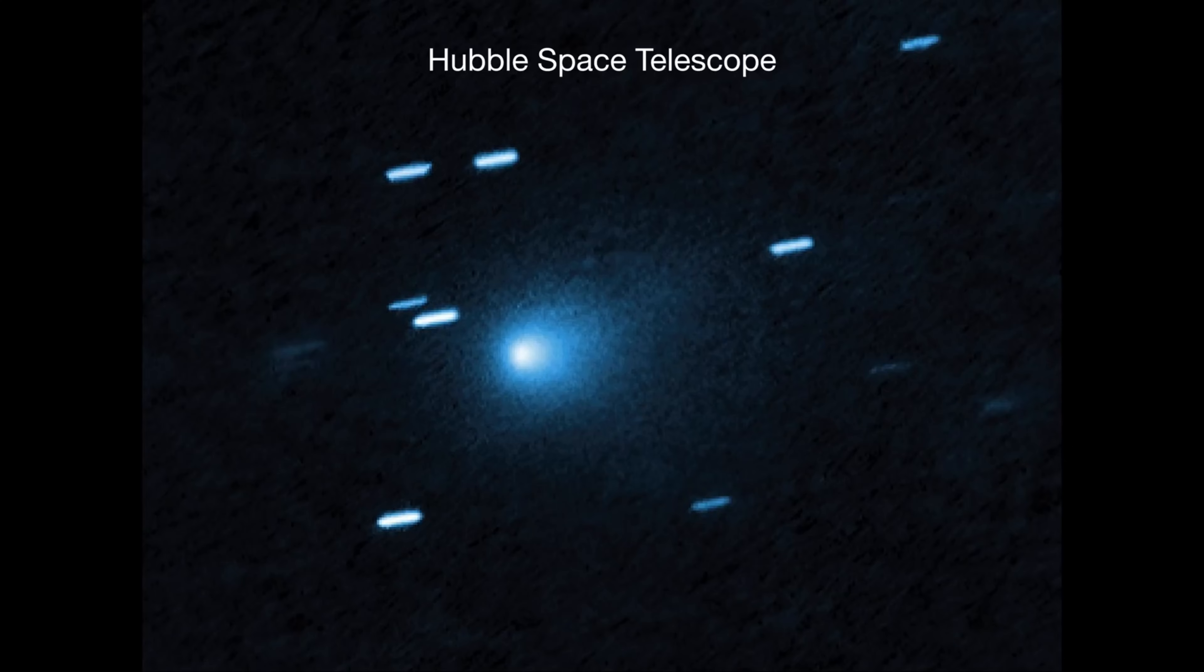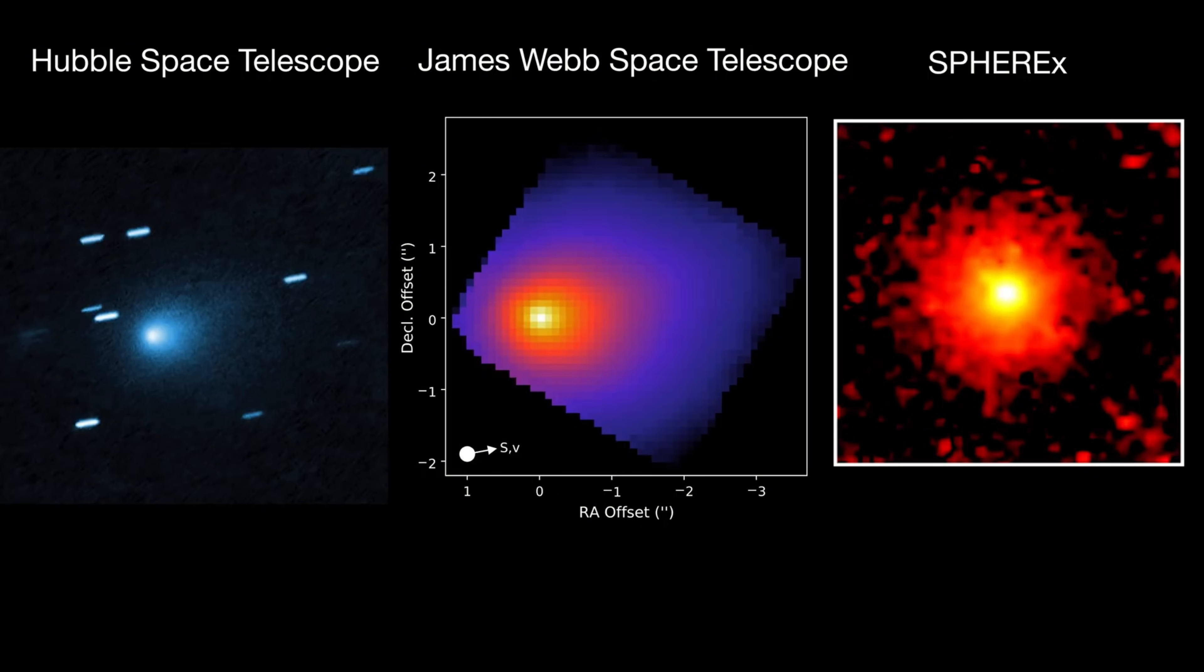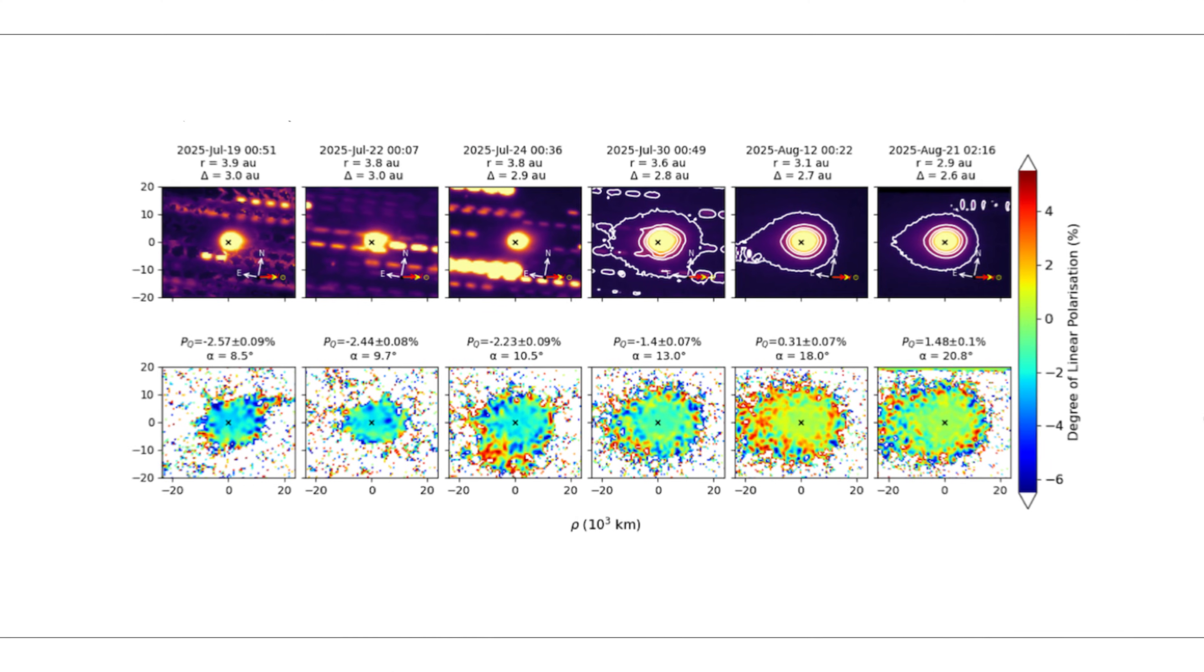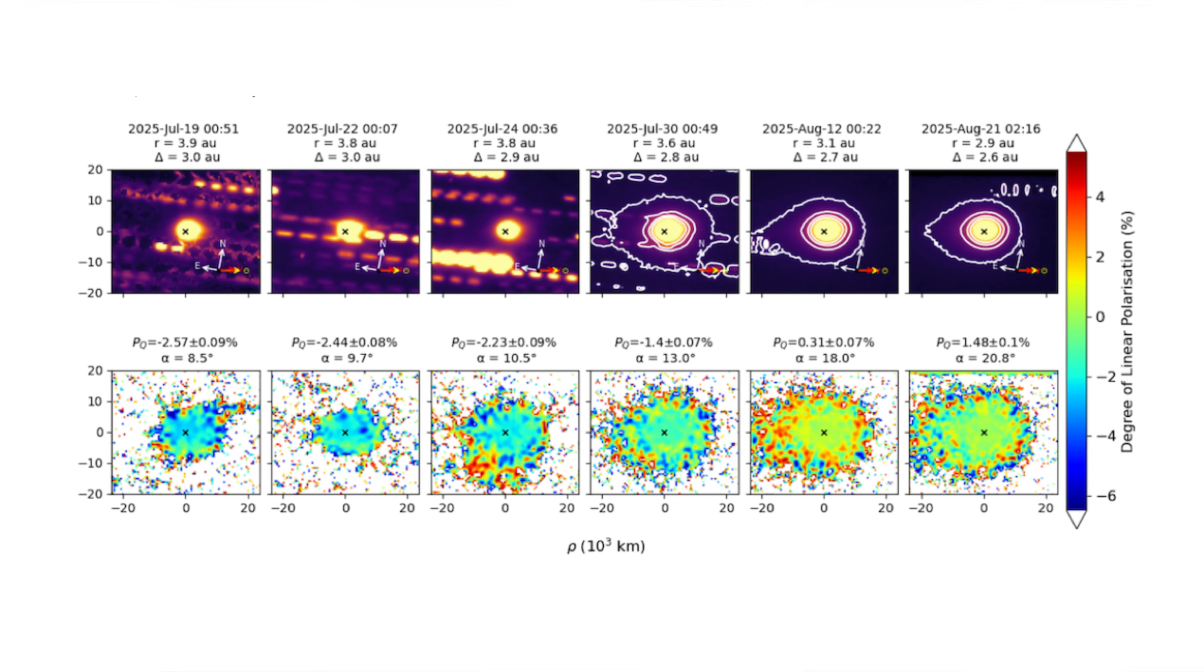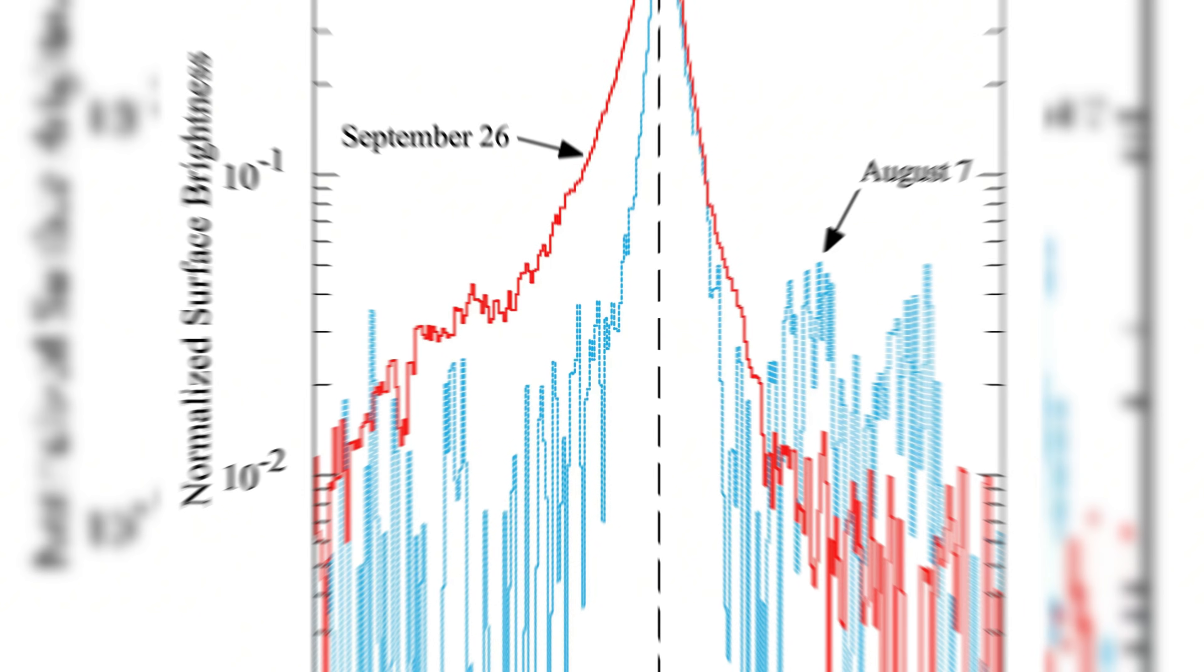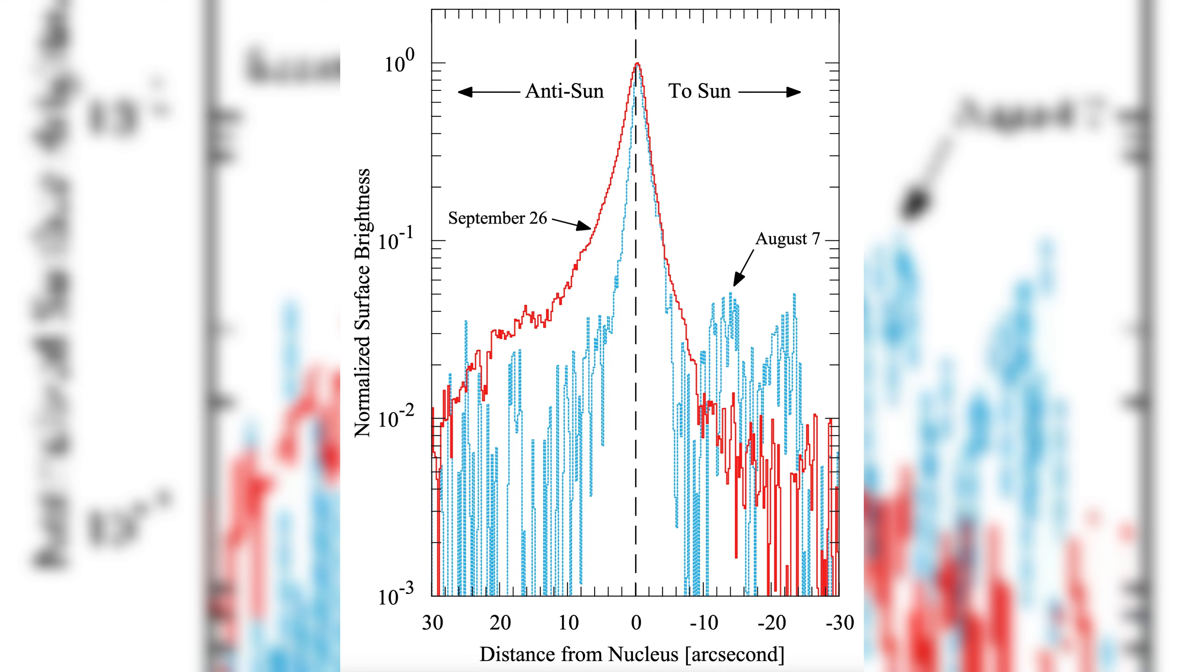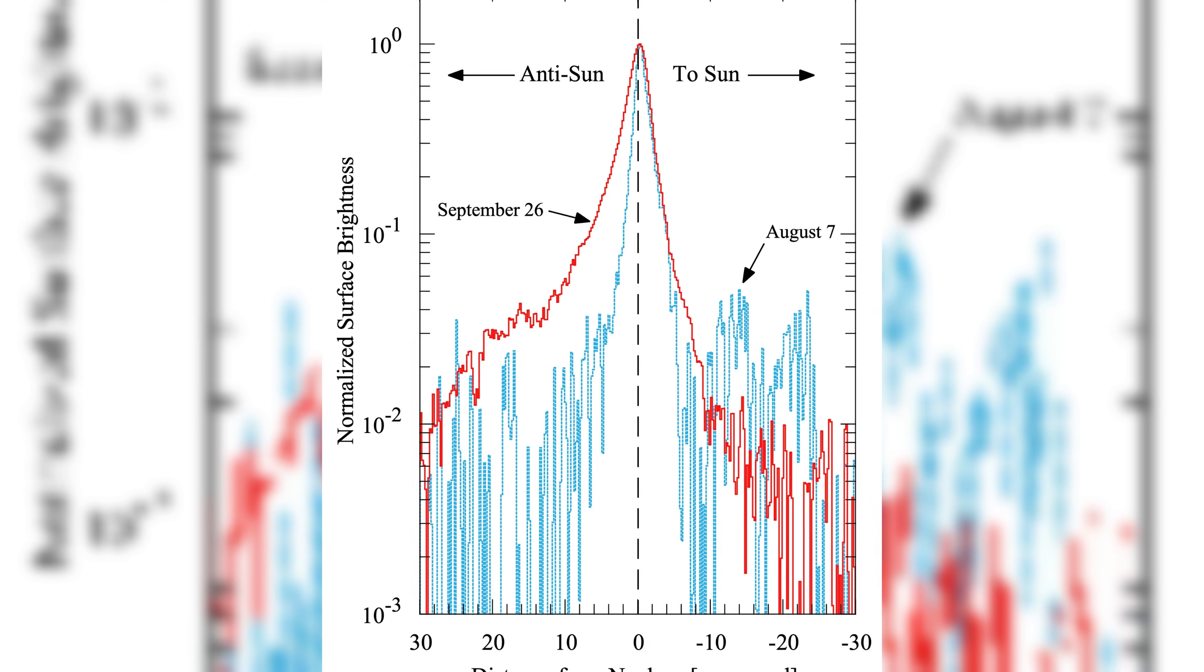In the realm of space exploration, artificial materials are often designed to exhibit specific properties, such as unusual polarization patterns, to enhance functionality or durability. The negative polarization observed on 3I Atlas could indicate that this object was designed for a purpose, perhaps with a specific function or ability in mind, one that we are only beginning to consider. Could it be that 3I Atlas is not just a random visitor from another star system, but an object intentionally constructed for a purpose beyond what we can immediately comprehend?